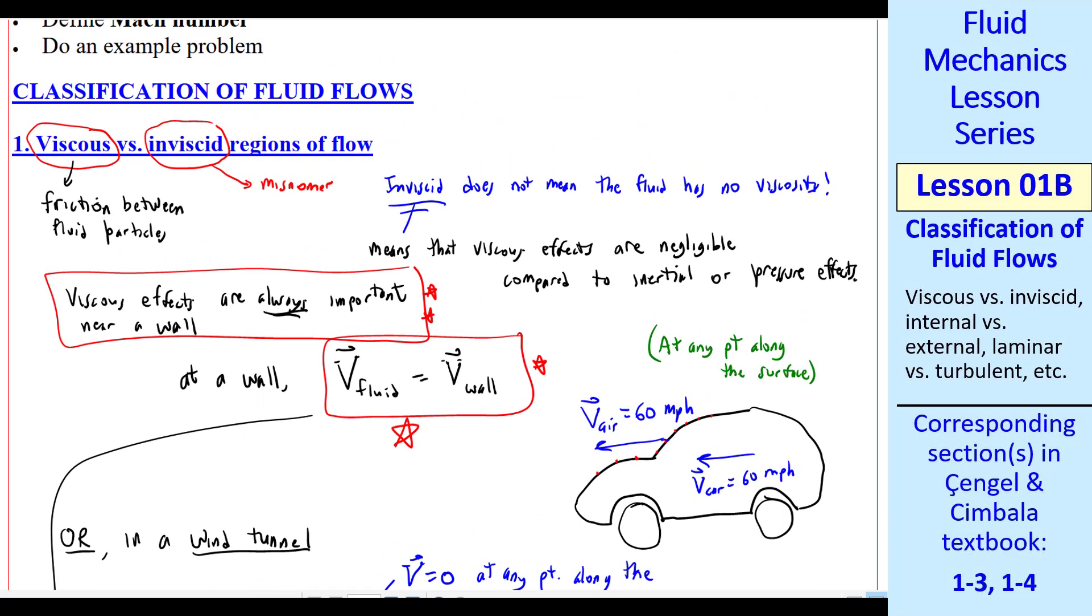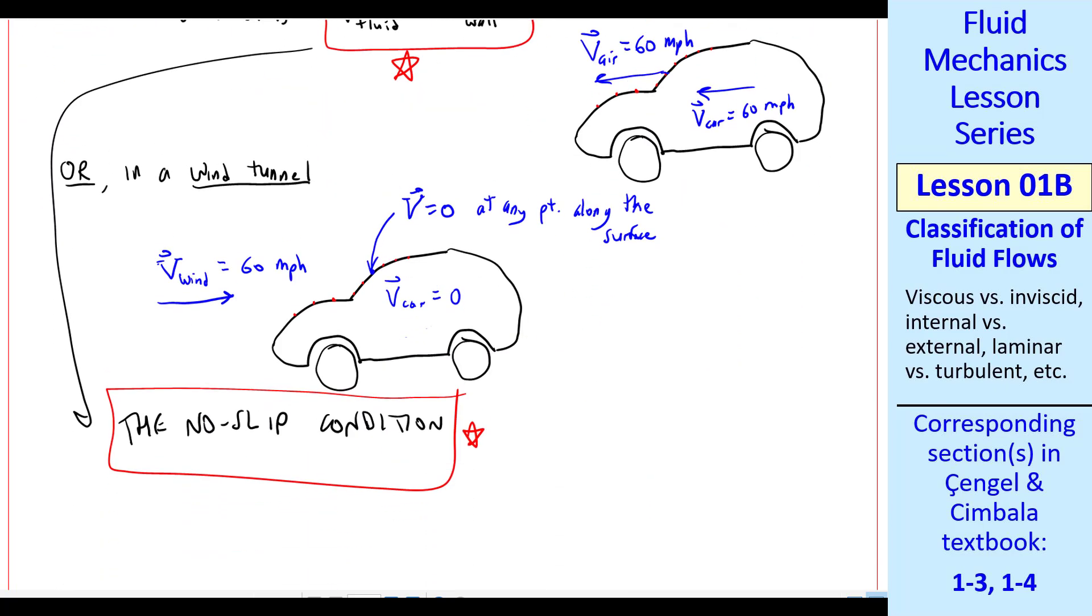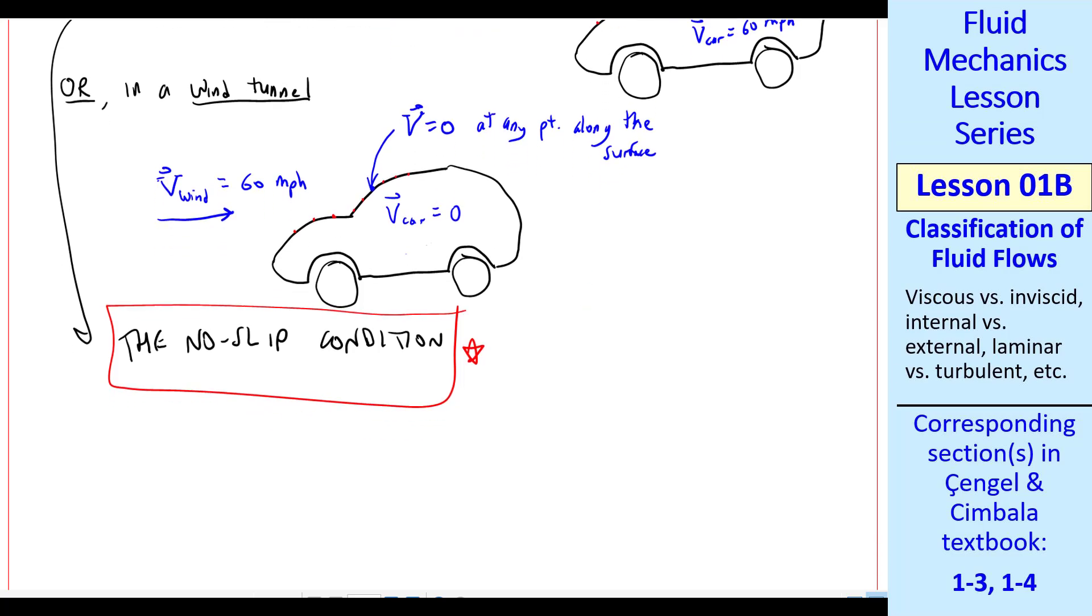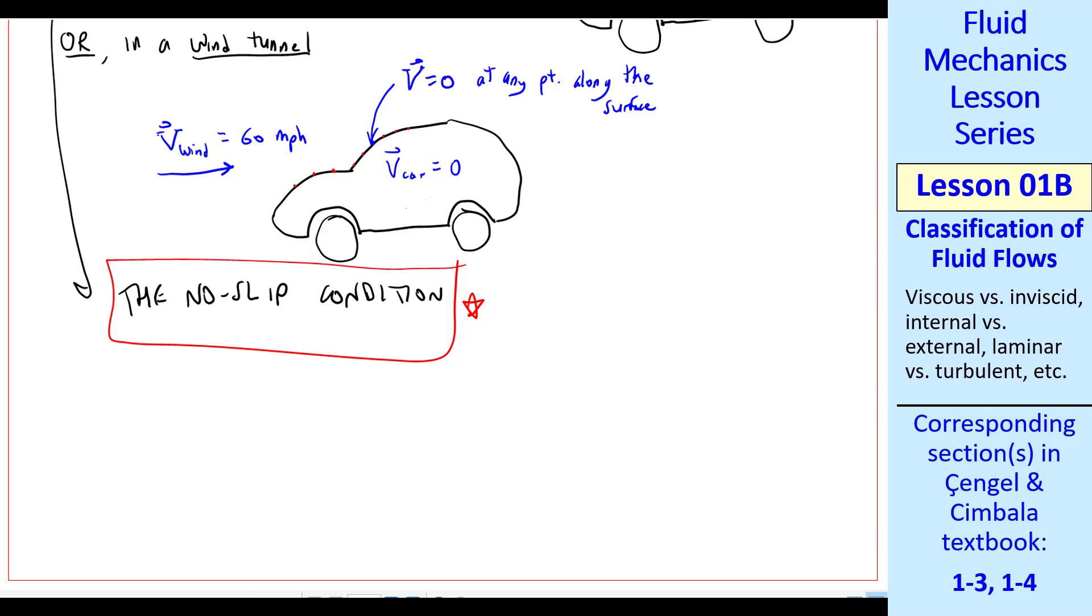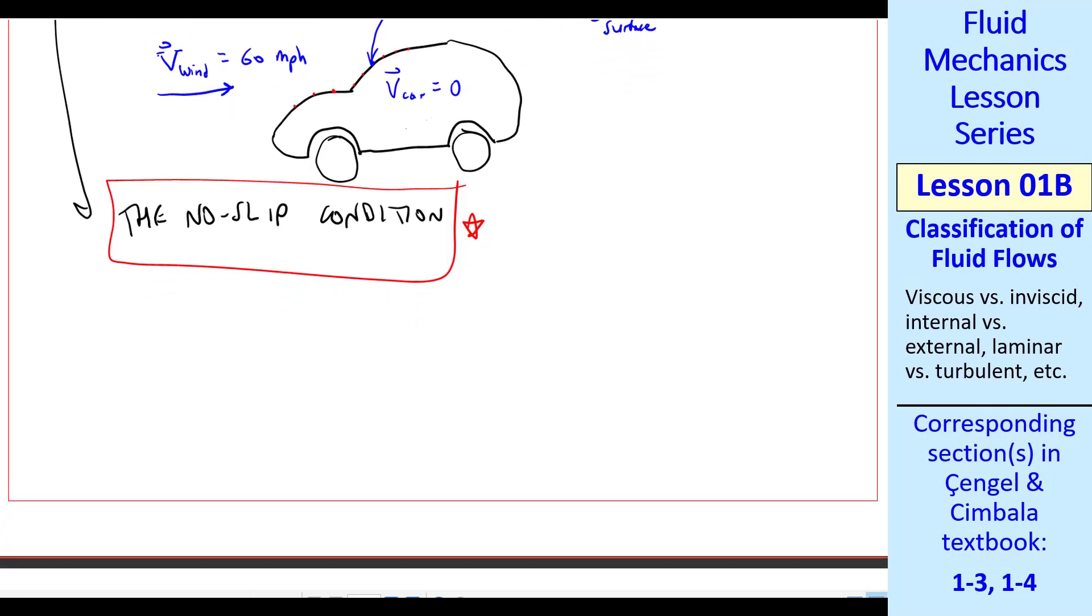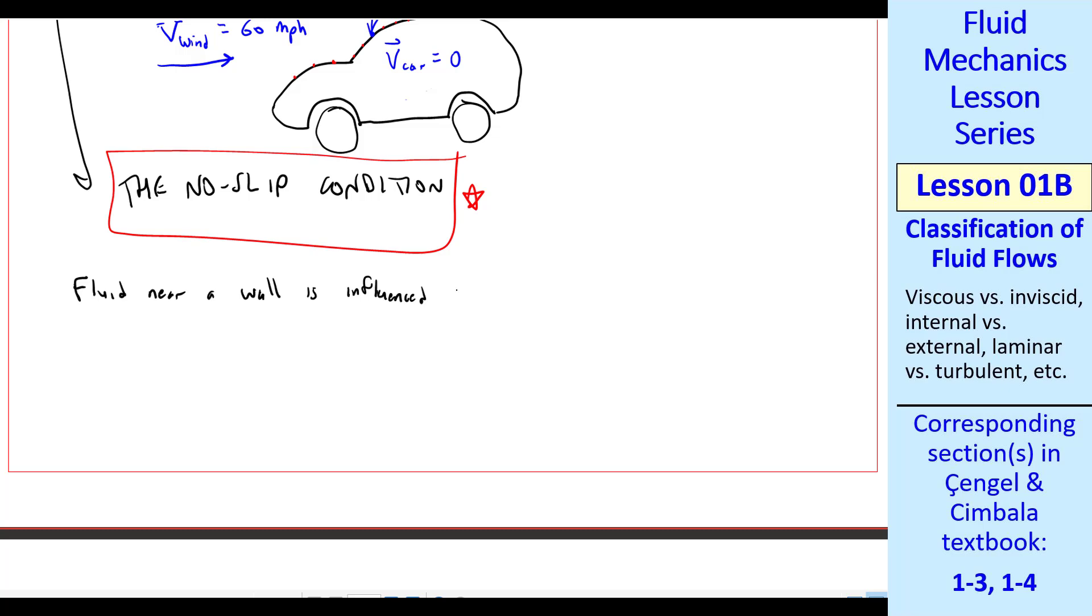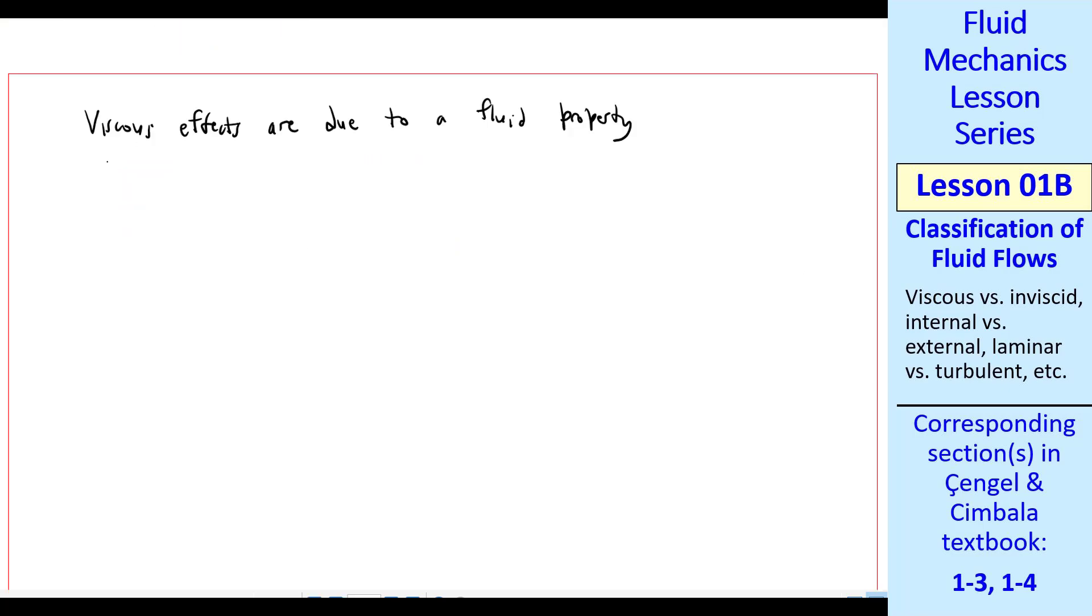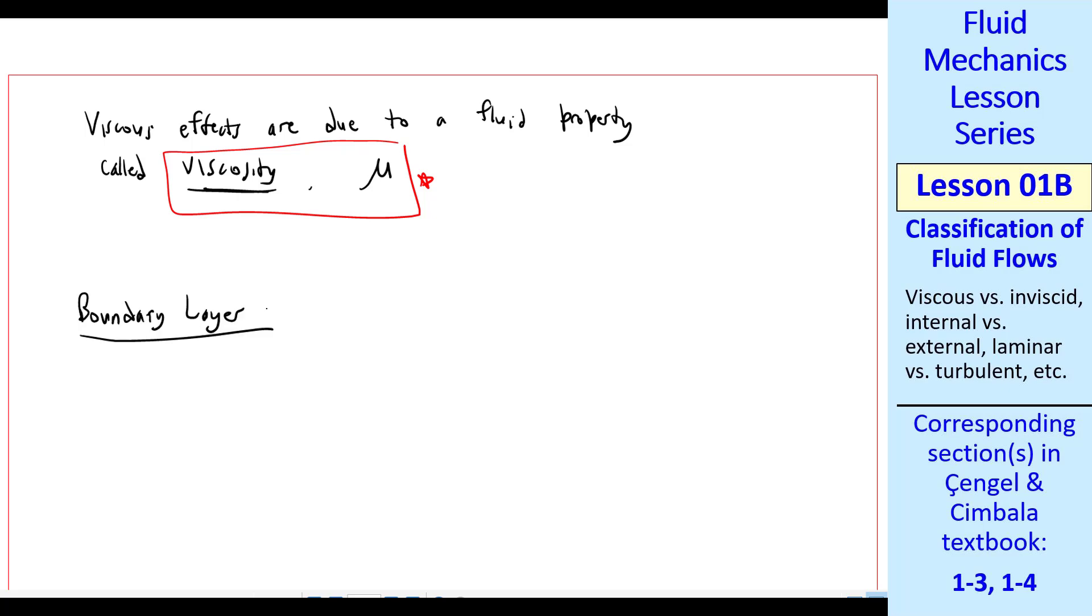Let's return to our discussion of viscous versus inviscid regions. I'm calling it regions now, and you'll see why. Very near the wall, viscous effects are always important, but away from the wall, viscous effects can be negligible. So we need to talk about regions where the flow is either viscous or inviscid. Fluid near a wall is influenced strongly by friction. This would be a viscous region, whereas fluid away from a wall is not strongly influenced by friction. We'd call that an inviscid region. Viscous effects are due to a fluid property that's called viscosity. It's given the Greek symbol mu. We'll discuss viscosity in more detail later.